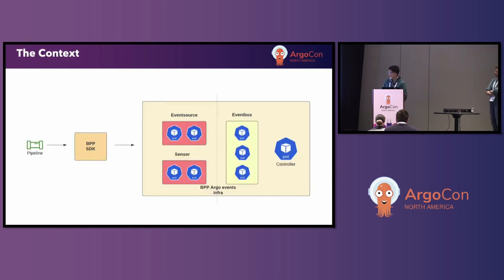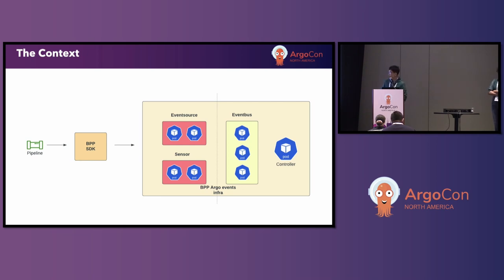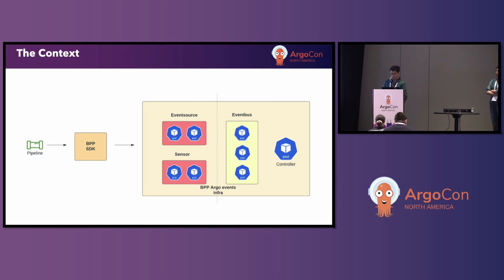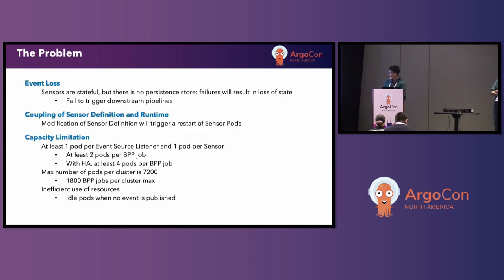In our platform, what we call BEP, we utilize Argo events to orchestrate different dependencies among the pipelines. As you know, Argo events contains the event source and the sensor, and both of them communicate through an event bus. When a customer or user defines pipelines, we provide an SDK that translates the definition of the pipelines into the definition of a sensor. Usually the sensor runs in an HA mode, so it will spin up at least two sensor pods. As we scaled our platform to more than 10,000 pipelines, we started to see a few challenges.